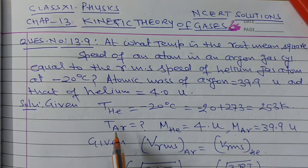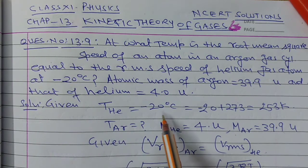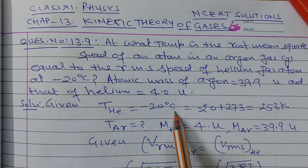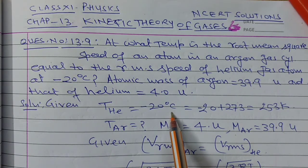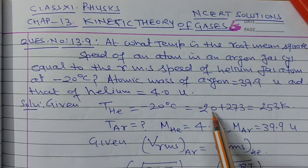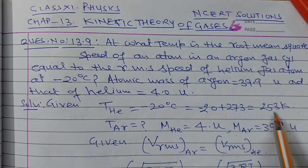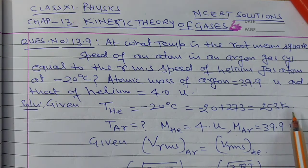In this question, given that the temperature of helium gas is minus 20 degrees Celsius. Converting to Kelvin: minus 20 plus 273 equals 253 Kelvin.